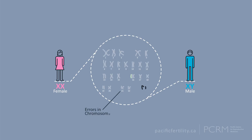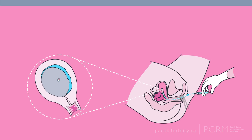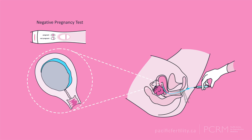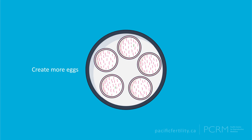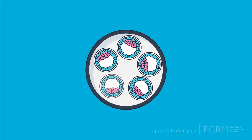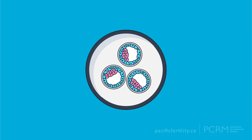Genetic diseases can result from errors in part of a chromosome or the entire chromosome. The most common cause of miscarriages and IVF failure is an embryo having too many or too few chromosomes, called aneuploid. Although this problem can arise from either the sperm or the egg, it is more common in eggs from women over 35 to 40 years old. IVF can help by creating more eggs, increasing the pool of embryos to choose from, and then avoiding those with chromosomal abnormalities.